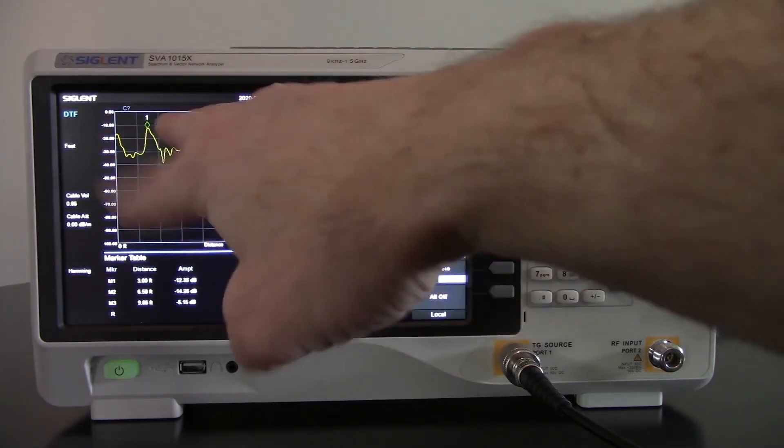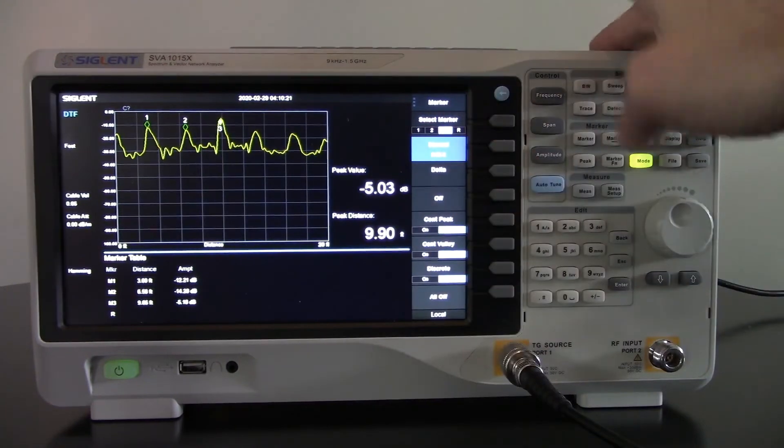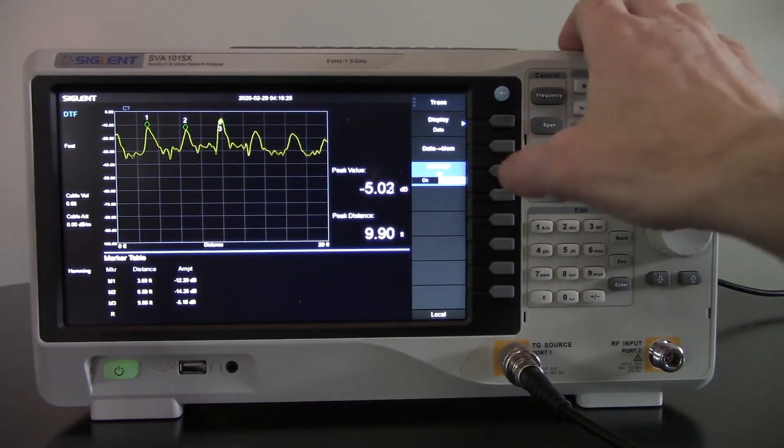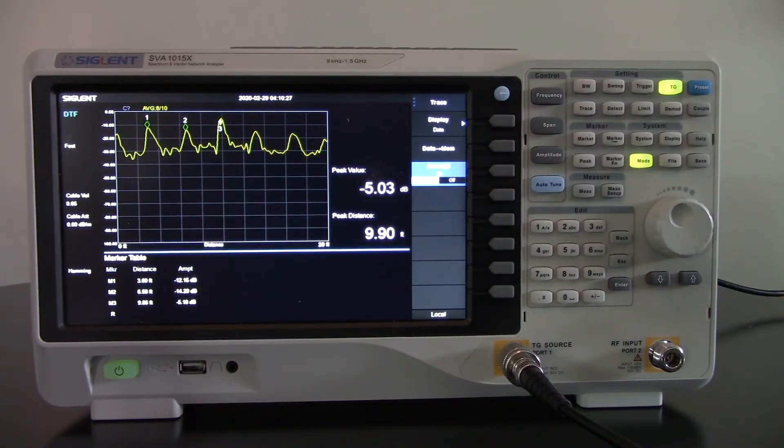And then they're all laid out for us. If you happen to see quite a bit of noise on the signal, we can actually do some averaging as well. We can go to trace and turn on averaging. And that will actually quiet it a little bit. You'll see the average count come up. And so now we're able to measure all of those distances to each of those different impedances.